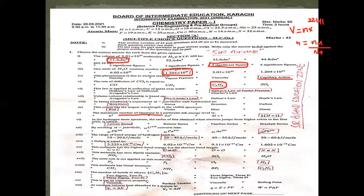Hydrogen bond energy range is 20–40 kJ. The hydrogen bond length range is also discussed. 1 Debye is equal to 3.335 × 10⁻³⁰ coulomb meter.